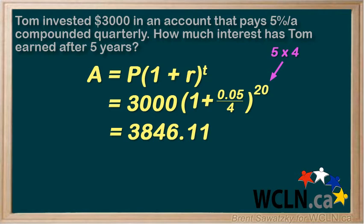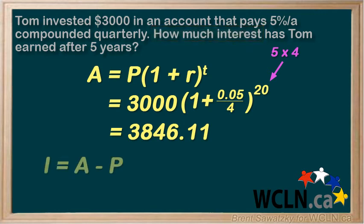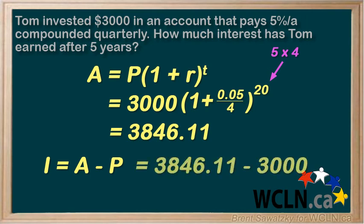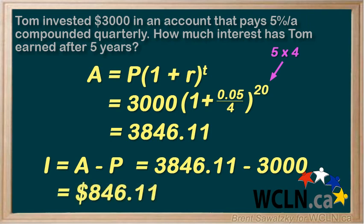Now, don't make the mistake of stopping there — we're not done. Notice that in the original question, we were asked how much interest has he earned. So to get our interest, we have to subtract our amount minus our principal. So $3,846.11 minus $3,000 leaves us with an interest of $846.11.